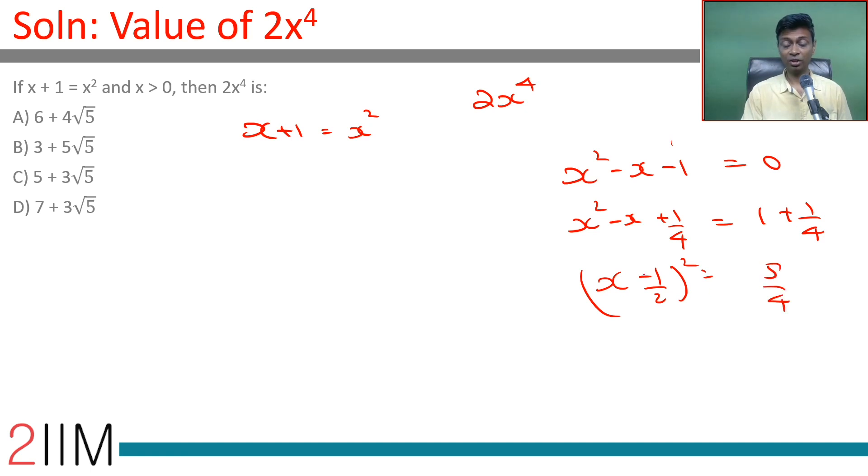With this we can find x. x - 1/2 = ±√5/2, so x = 1/2 ± √5/2. Since x is positive, it is only 1/2 + √5/2.